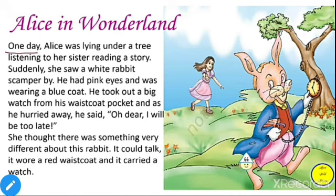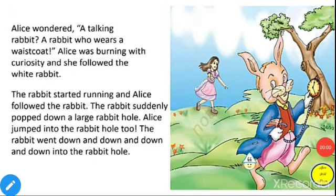Now let's read the prose lines. One day Alice was lying under a tree listening to her sister reading a story. Suddenly she saw a white rabbit scamper by. He had pink eyes and was wearing a blue coat. He took out a big watch from his waistcoat pocket and as he hurried he said, 'Oh dear, I will be too late.' She thought there was something very different about this rabbit — it could talk, it wore a red waistcoat, and it carried a watch. Alice wondered: a talking rabbit — a rabbit who wears a waistcoat!